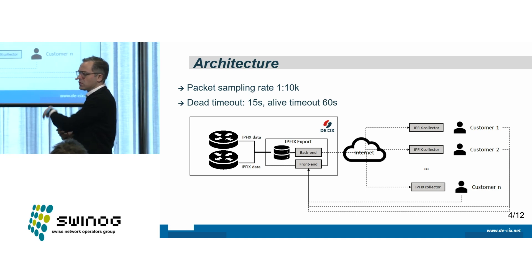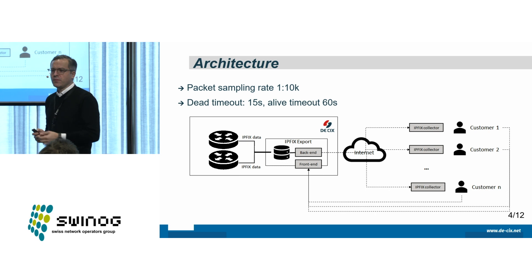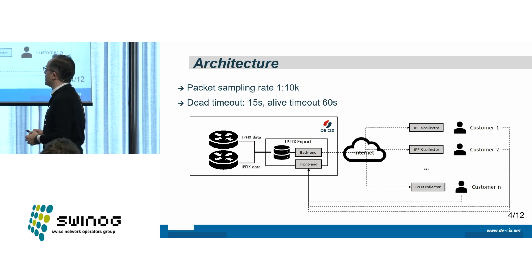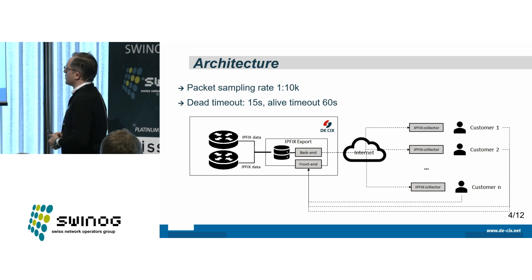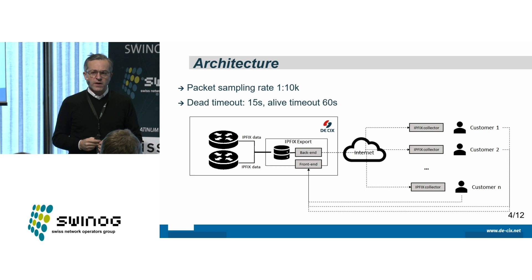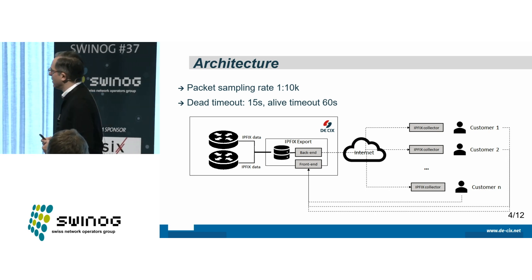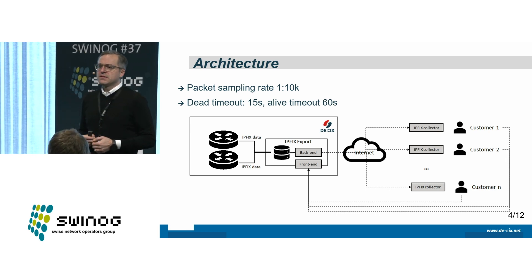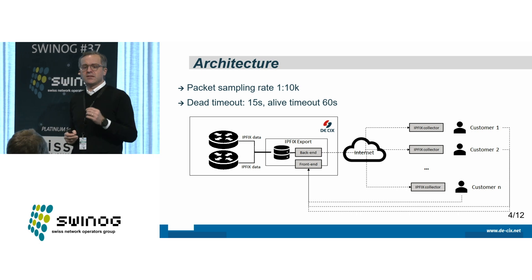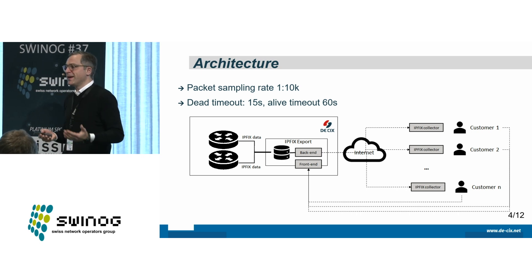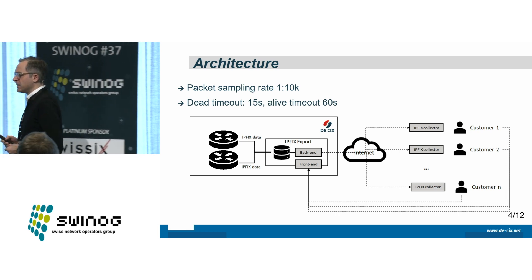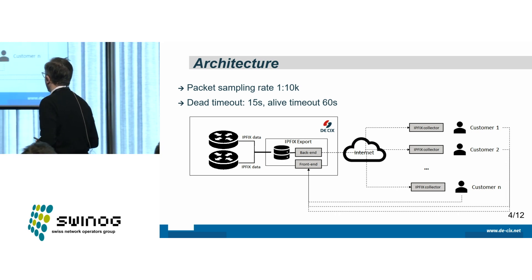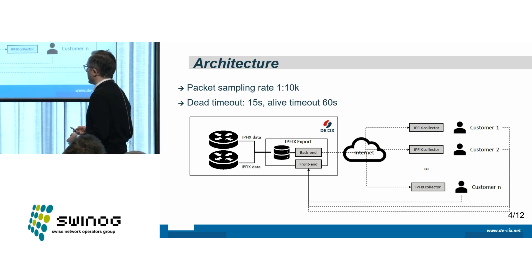We have open source tools to set this up, which I'll talk about in a second. We have a few technical parameters: the sampling rate is 1 to 10,000 frames, so it's very rough, but it still gives you an overview of where the traffic is coming from. Especially if you're in a massive DDoS-fighting situation.